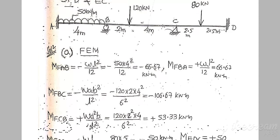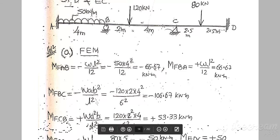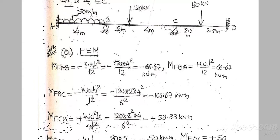For fixed end moment BC, observe the span — there is a point load, but it is not at the exact center. Go to the fixed end moment formula list and take the appropriate formula. If the point load is not at the exact center, the formula is: minus W·A·B² / L².